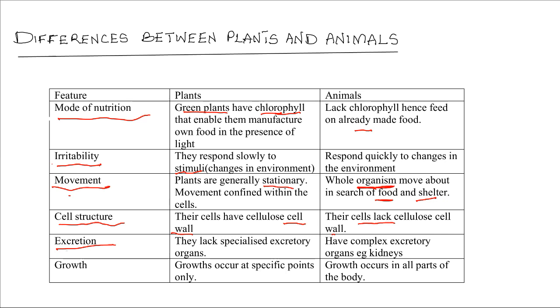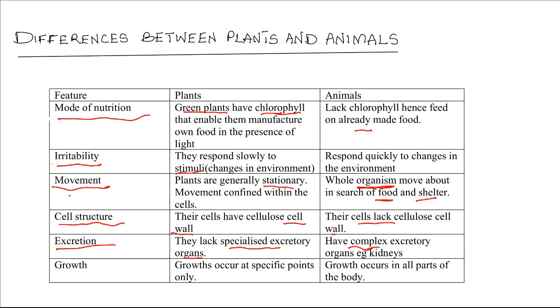Excretion. Plants do not have specialized excretory organs, while animals have specialized and complex excretory organs such as a kidney.